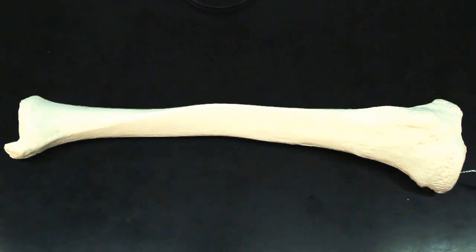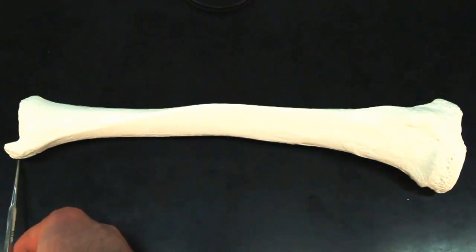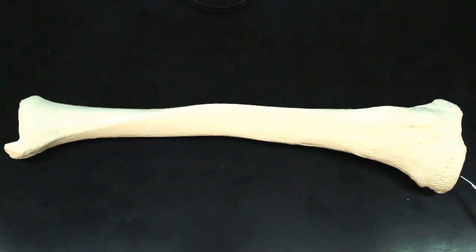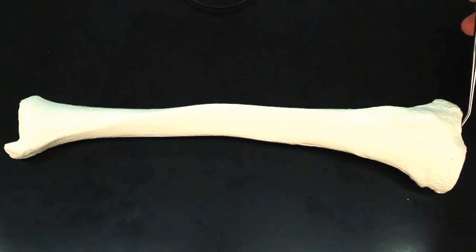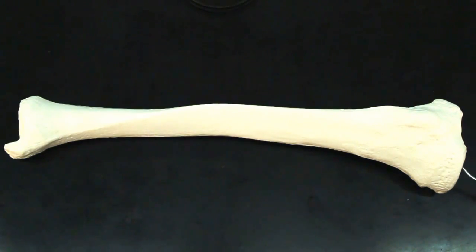Now it's the medial condyle because it's on the same side as the medial malleolus. And this one over here is the lateral condyle. So come up here on the flat surface, the lateral condyle. And this one over here is medial.